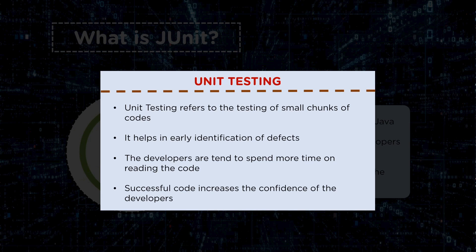Unit test casing is very important from the developer's perspective because it helps developers understand whether they have written successful code or if there is any scope for issues or bugs. Successful unit test cases increase the overall confidence of developers because it increases the overall performance and quality of the product. By having successful executions of unit test cases, developers can understand that the source code is working fine and there is no scope for bugs — and that the source code is ready for production environment deployment.